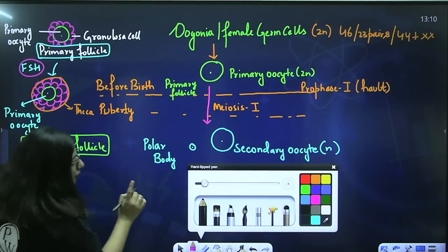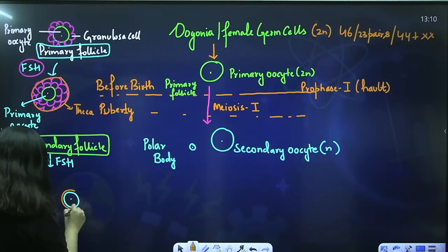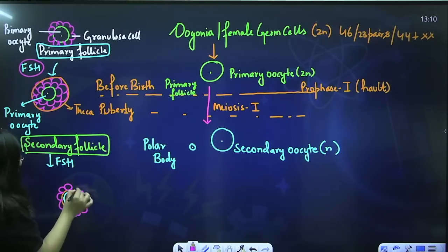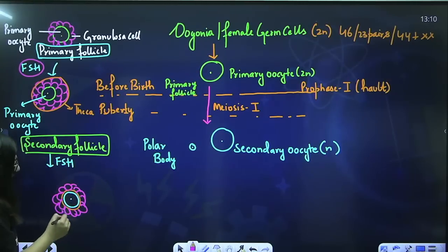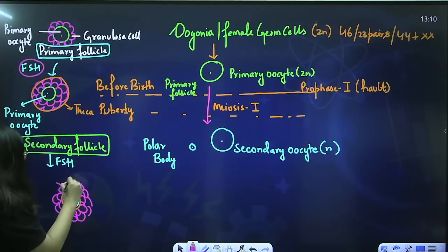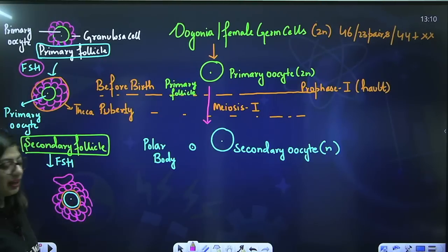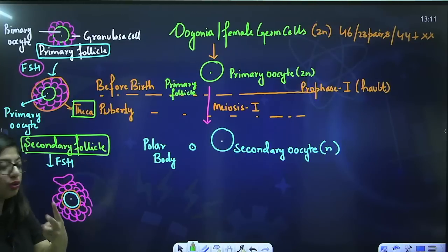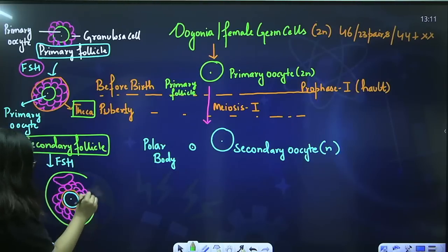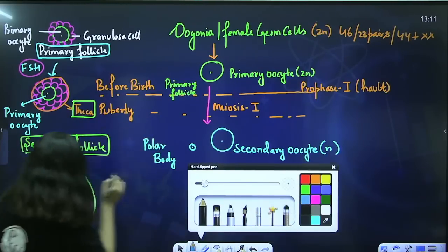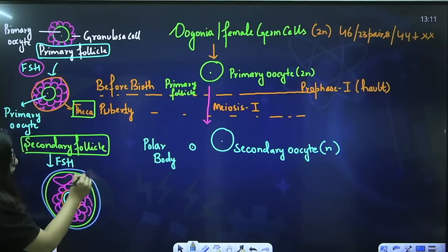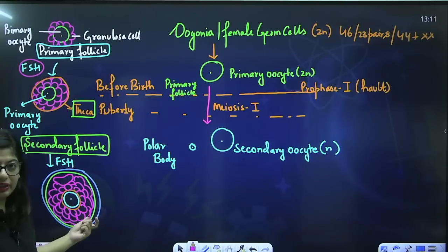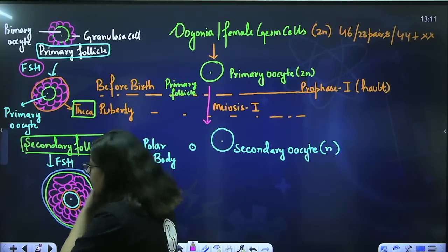The tertiary follicle is a little different. It has a greater number of granulosa cells, it has also produced a cavity inside it, and this theca layer has been differentiated into two layers: theca externa (outer) and theca interna (inner). The granulosa cell number increases. This is your tertiary follicle, formed because the female is releasing a lot of FSH — follicle stimulating hormone — which stimulates the follicle to grow.